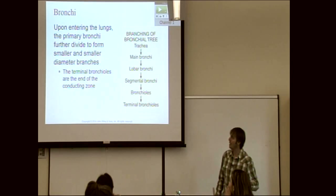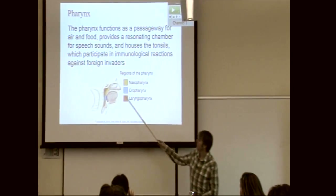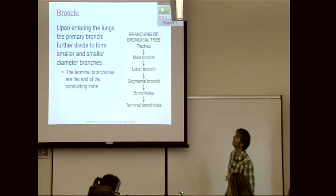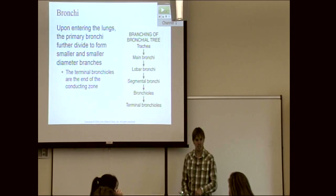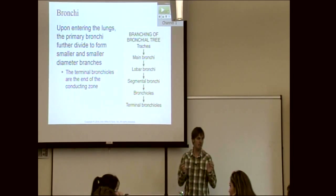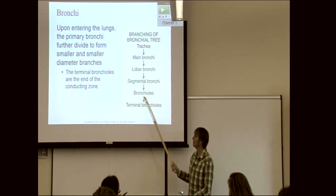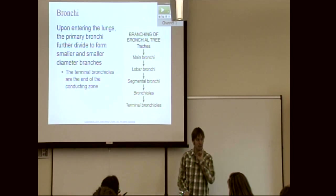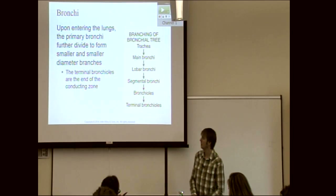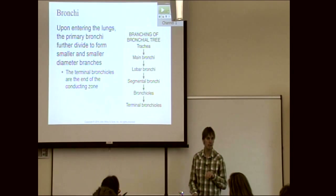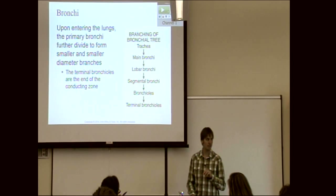After air goes through the nose or mouth and the pharynx, it passes the epiglottis into the trachea. From the trachea there's a whole bunch of branching — like a tree, starting out big and every time it divides the passageways become narrower. It goes: trachea, main bronchi, lobar bronchi, segmental bronchi, bronchioles, and terminal bronchioles. We're trying to eventually get the air spread out to the largest surface area possible, to reach the alveoli.